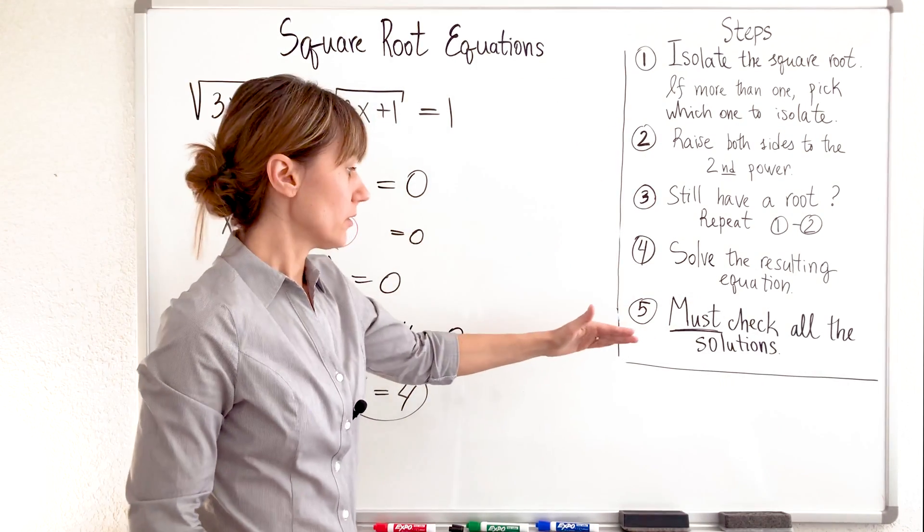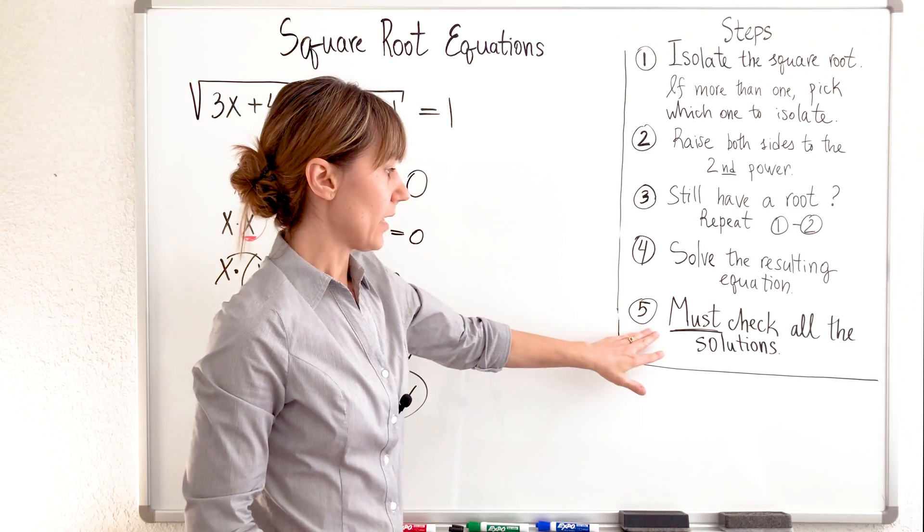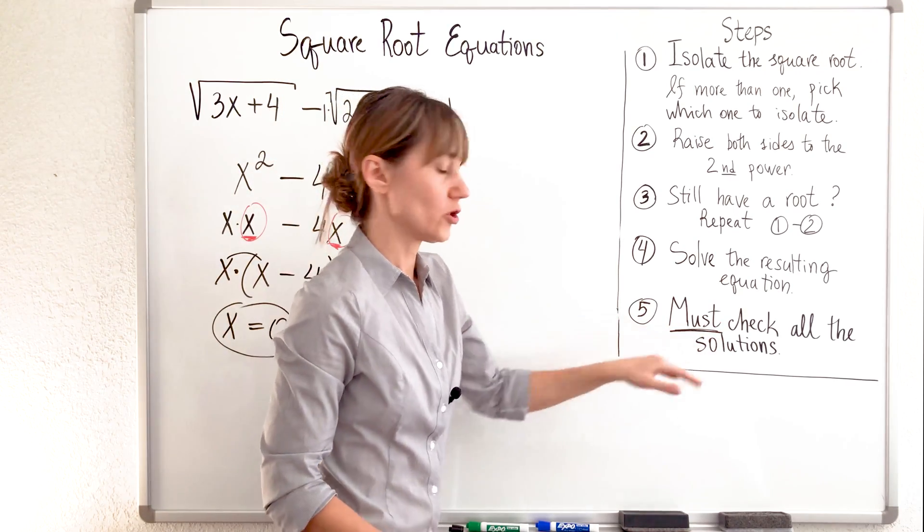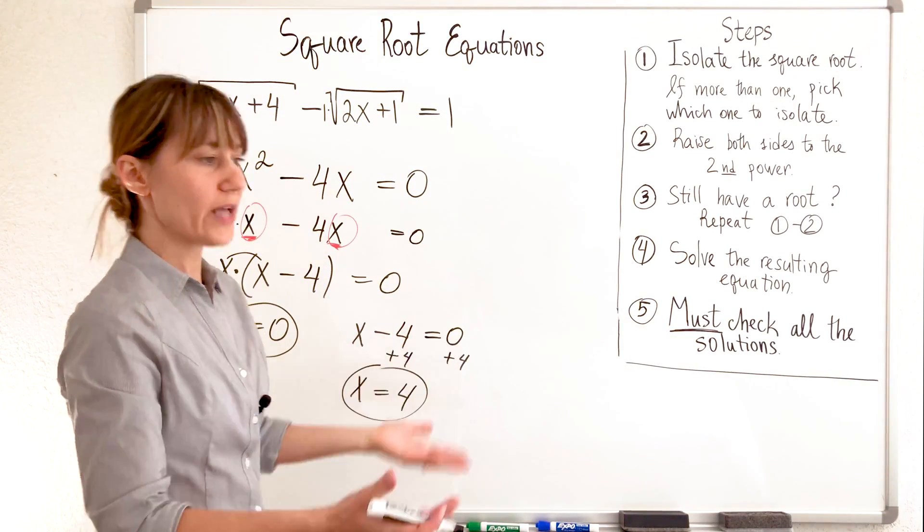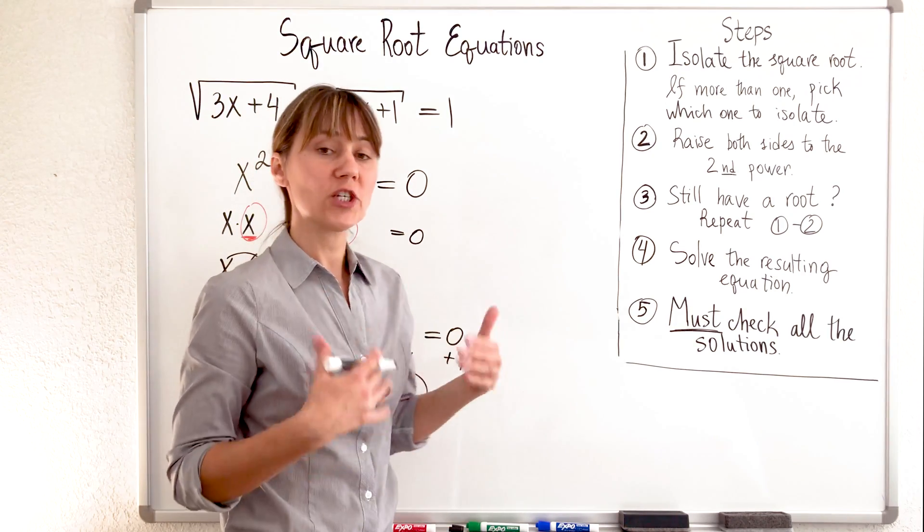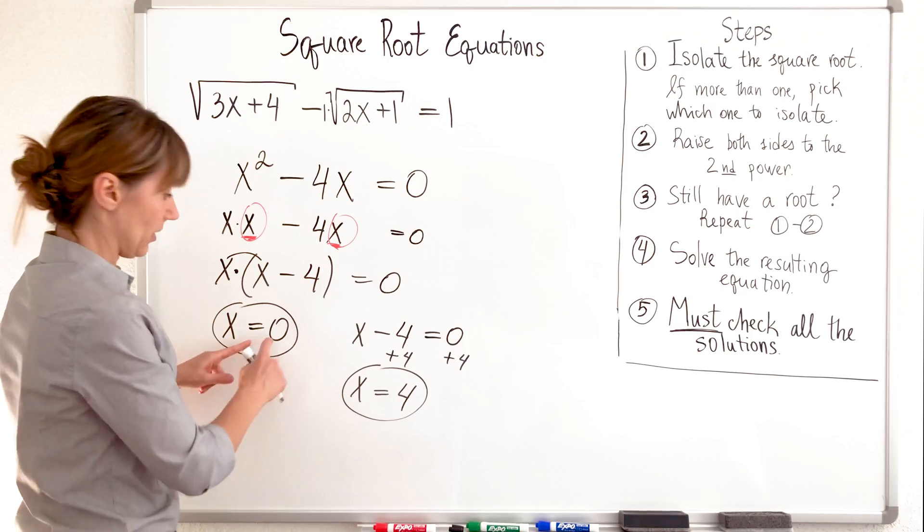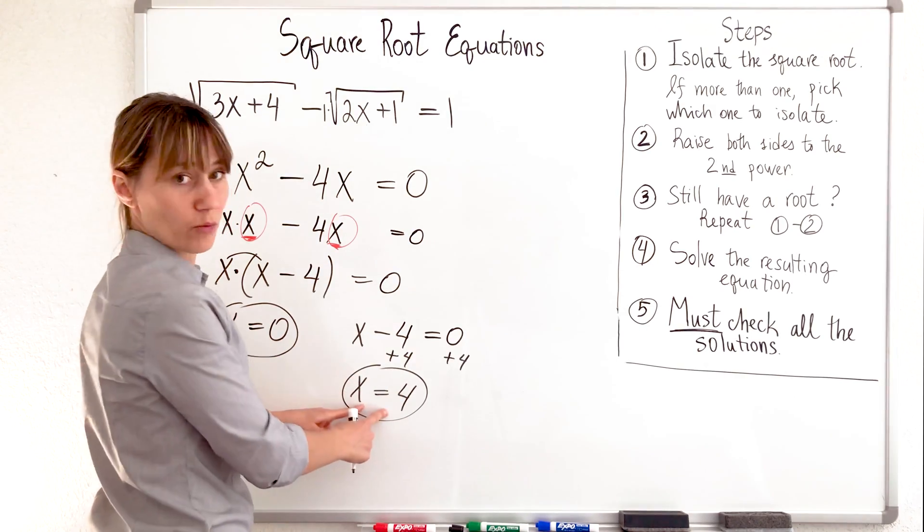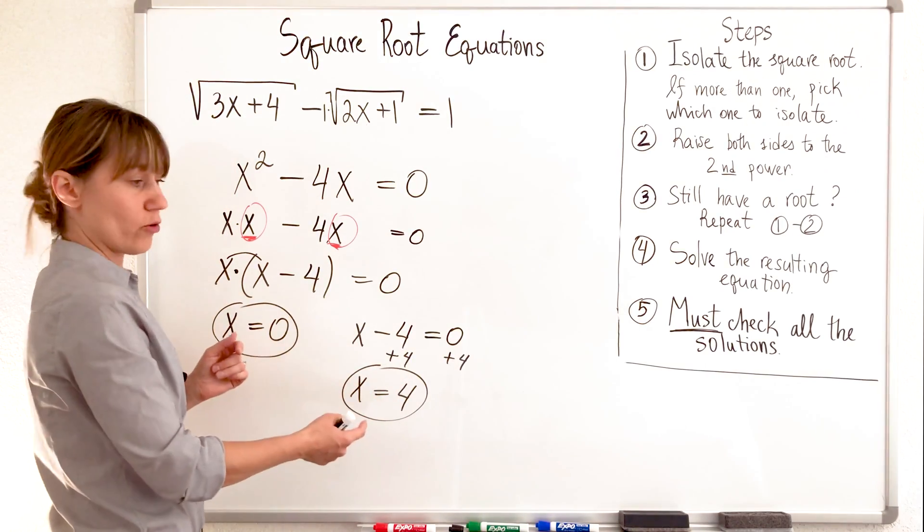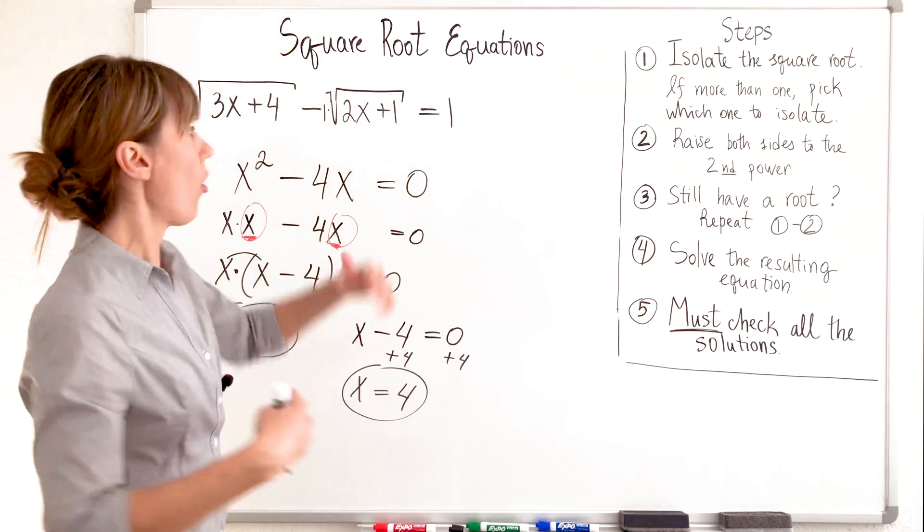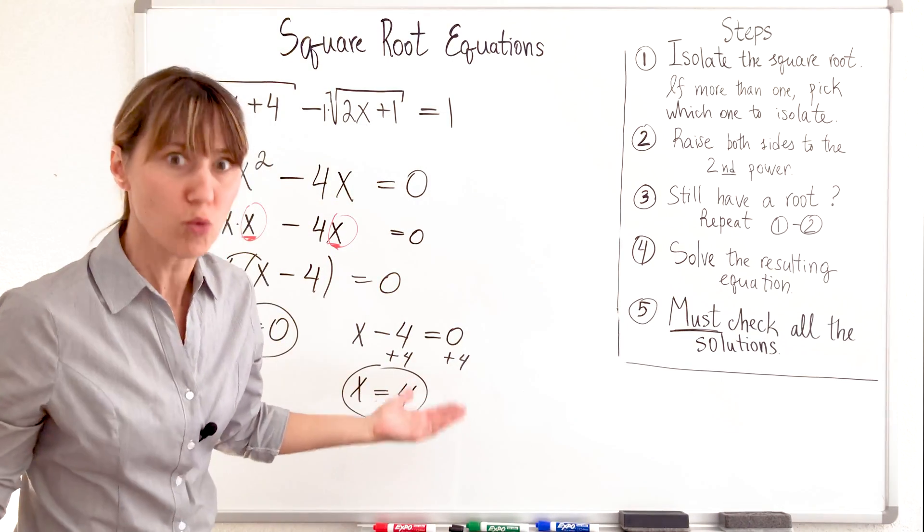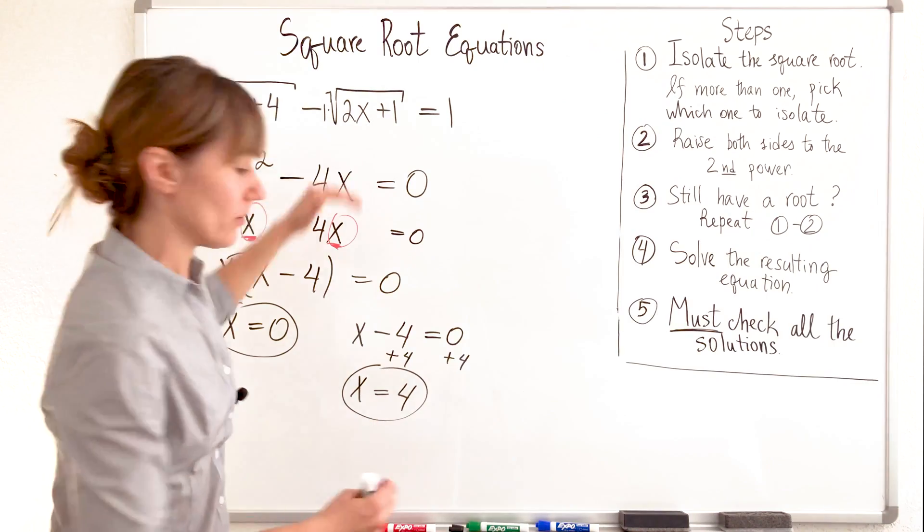We are following these rules. And the last one is we must check all the solutions, because squaring both sides may introduce extraneous or invalid solutions. So we must check. Maybe this one won't check out. Maybe this one won't check out. Maybe both won't check out. I don't know. I will know only if I check. It's a pain to check. It wants to check. We got to do it.